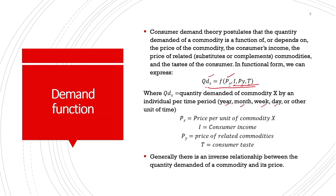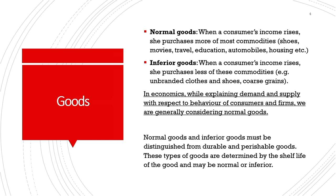This inverse relationship is not universally applicable to all goods. Economists distinguish between normal goods and inferior goods. Normal goods are those for which a consumer has a preference for more when income rises—examples include shoes, bags, movies, travel, education, automobiles, and housing. This inverse price-demand relationship is applicable mostly to normal goods and services.